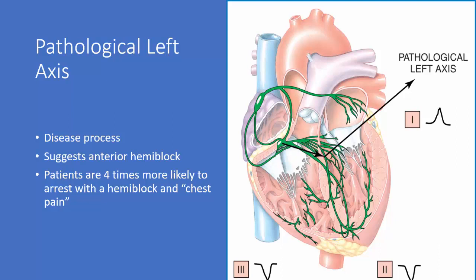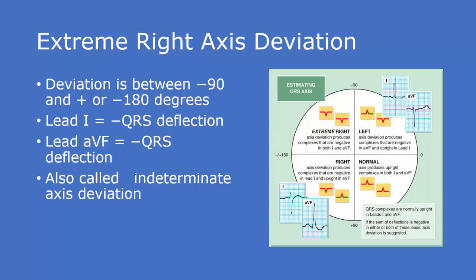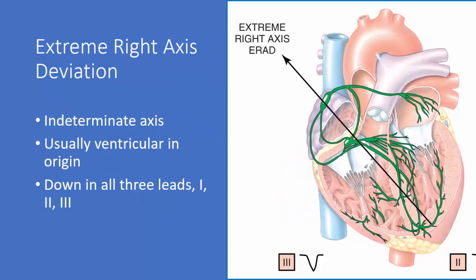The worst of it all, extreme right axis deviation, ERAD, no man's land. You do not want your patient's conduction going the opposite way of where it should be. You're going to see a negative lead one and a negative AVF. This is also called an indeterminate axis deviation. It's usually ventricular in origin, related to ischemia or even necrosis, where the cardiac tissue cannot accept the conduction because it's, for all intents and purposes, dead. That patient probably has had some severe muscle damage in the lower portions of the heart.